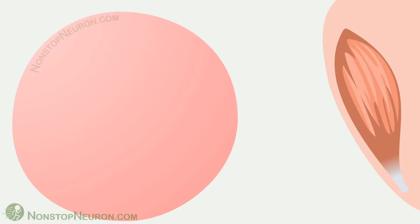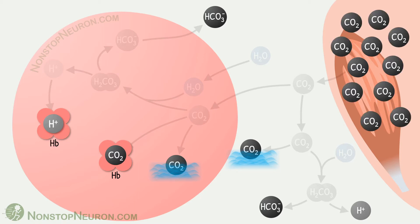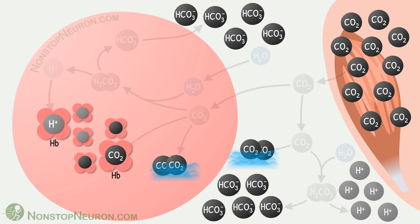In the video on transport of carbon dioxide, we have seen that carbon dioxide is produced at peripheral sites during metabolism. This carbon dioxide diffuses into the blood and takes various forms, and it is transported in these forms. Now, if the partial pressure of carbon dioxide increases, the quantity of all these products also increases. The carbon dioxide dissociation curve shows the relationship between partial pressure of carbon dioxide and total carbon dioxide content of blood in all these forms.